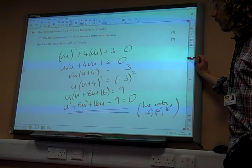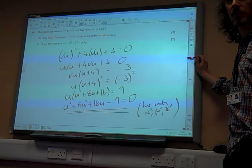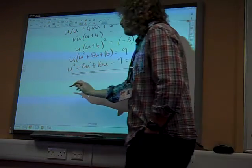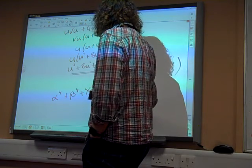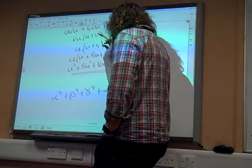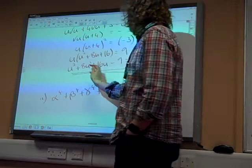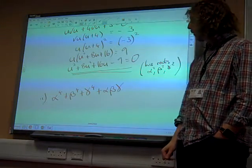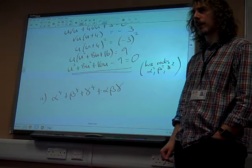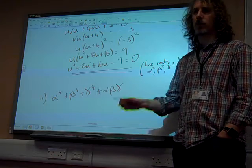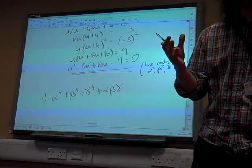And the question now says find the value of alpha to the 4 plus beta to the 4 plus gamma to the 4 plus alpha beta gamma. So we've got to think, how are we going to come up with that expression there? Well, we maybe know this bit about, we've done stuff with finding alpha squared plus beta squared plus gamma squared before, from alpha, beta, gamma stuff.